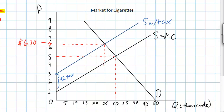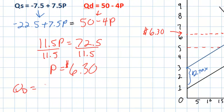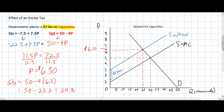We can now solve for the new equilibrium quantity by plugging the price of $6.30 into one of the two equations. Quantity demanded equals 50 - 4(6.30) = 50 - 25.2 = 24.8 thousand cigarettes. So following the $2 tax, the quantity falls to 24.8 thousand cigarettes at a consumer price of $6.30.